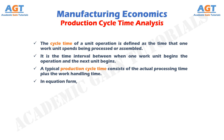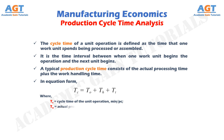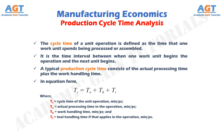In equation form: TC equals TO plus TH plus TT. Where TC represents cycle processing time of the unit operation, expressed in minutes per piece. TO represents actual processing time in the operation, expressed in minutes per piece. TH represents work handling time, expressed in minutes per piece, and TT represents tool handling time if that applies in the operation, also expressed in minutes per piece.